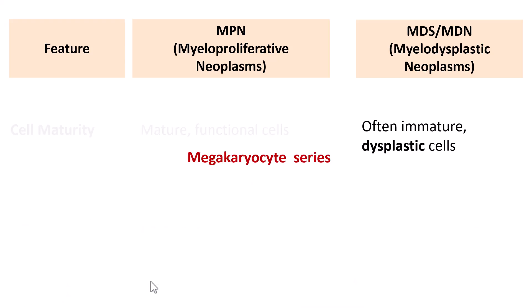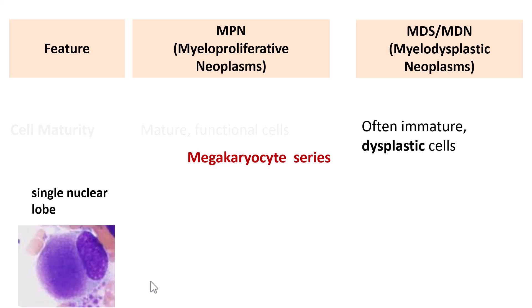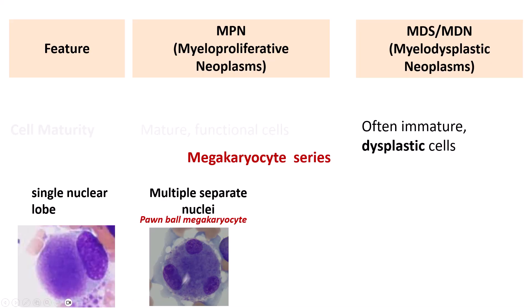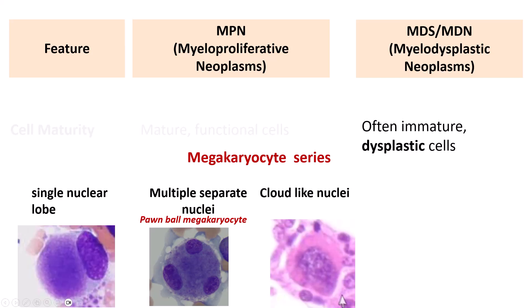In the megakaryocyte series, normally the megakaryocyte is multi-lobated. When dysplastic, it shows a single nuclear lobe or can have multiple separate nuclei — resembling pawn balls on a chess board, which is why it's called a pawn ball megakaryocyte. Nuclei can also fuse together forming cloud-like appearances. The definitive criteria for MDS dysplasia remains more than 10% dysplastic cells in at least one lineage.